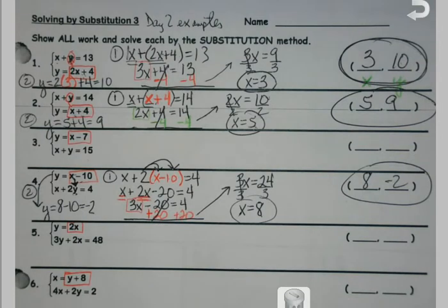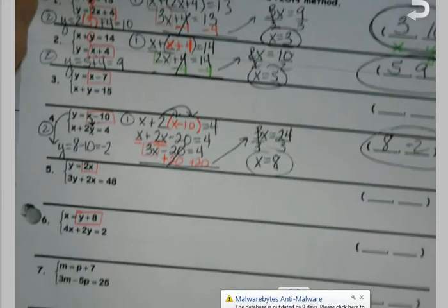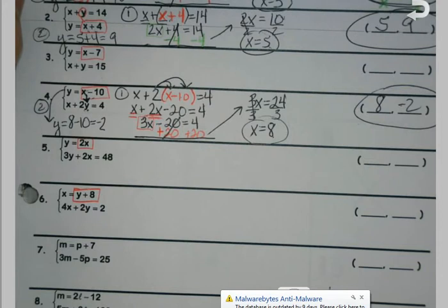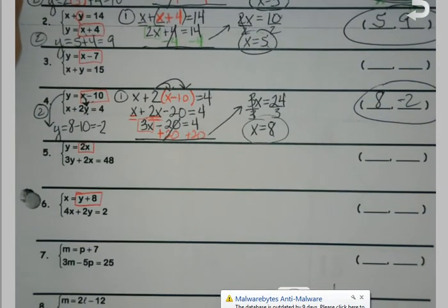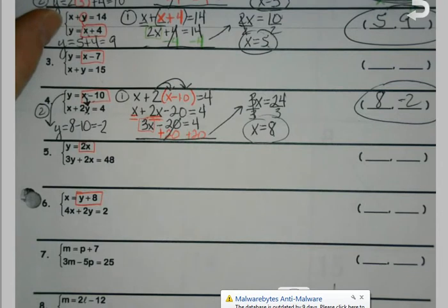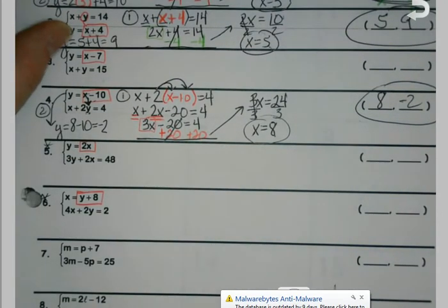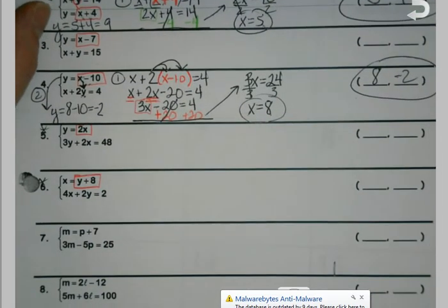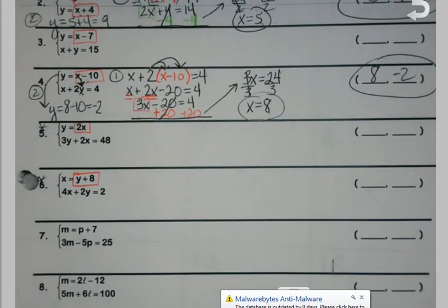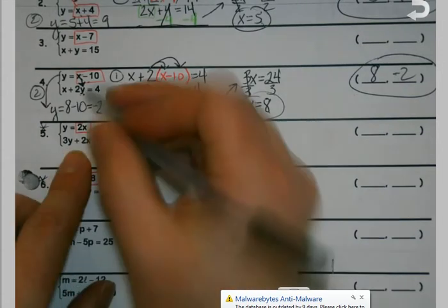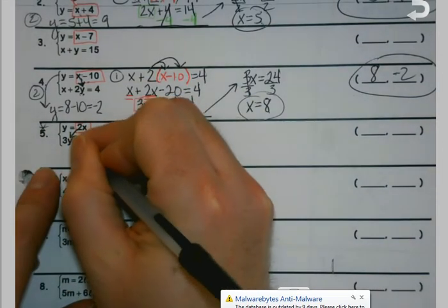And it doesn't mean necessarily that every time it's going to have to be something large and complex. Because there's just a couple more I want to take a peek at here. I want to take a peek at 5, and then I think we're going to take a peek at 9. So 5, it says y equals. So I'm going to plug it in where the y goes here.